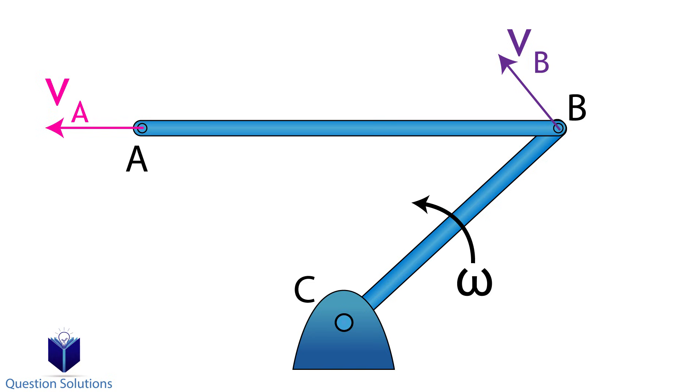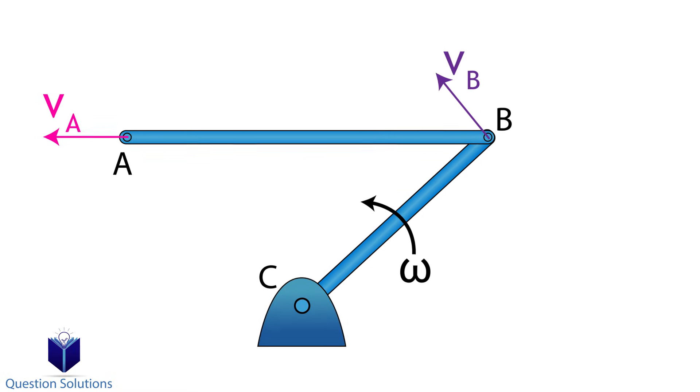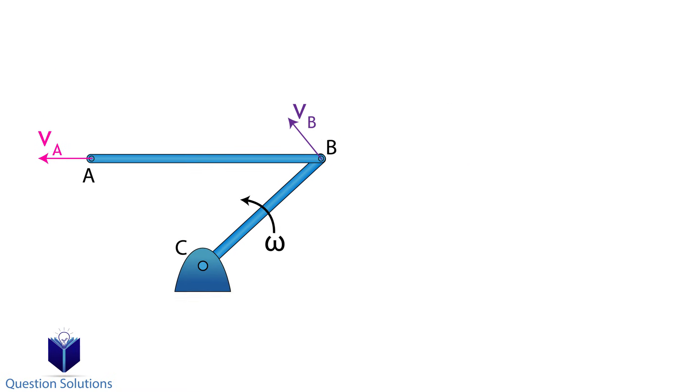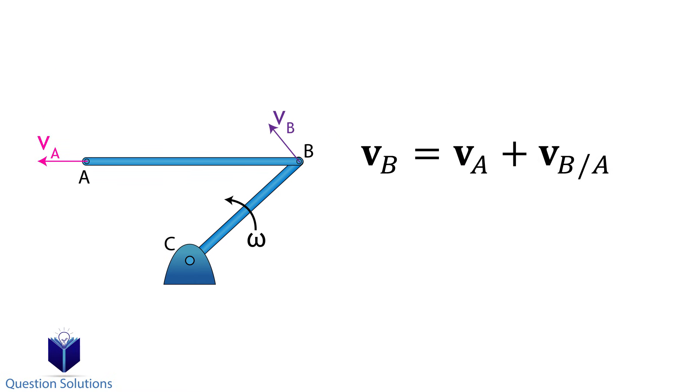We can also do it the other way around. So if we know the velocity of a point, we can figure out the angular velocity. That's pretty much what we will do in this section and we're going to do it using this equation. It's the relative motion equation for velocity. We can also expand VB over A like this. We'll see how to use this equation when we go through some examples.